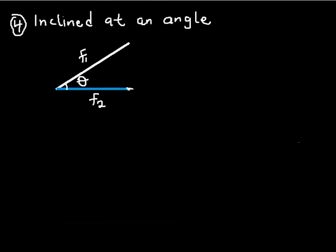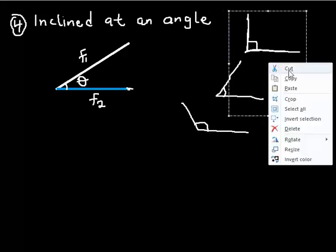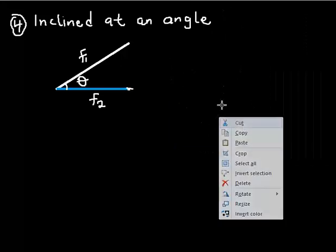Welcome back. We'll continue from where we stopped. We are still discussing the resultant of two vectors. We've already looked at the case where they are perpendicular. Now we're looking at another case scenario where the two vectors are inclined at an angle that is not 90 degrees — either an acute angle or an obtuse angle. So how do we find the resultant of two vectors when they are inclined at an angle?